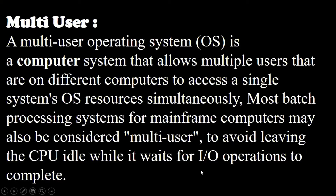Now moving towards the multi user operating system: a multi user operating system is a computer system that allows multiple users on different computers — for example, users in different places, different cities, or different branches of a company or bank — to access a single system's resources simultaneously. Most batch processing systems for mainframe computers may also be considered multi user.